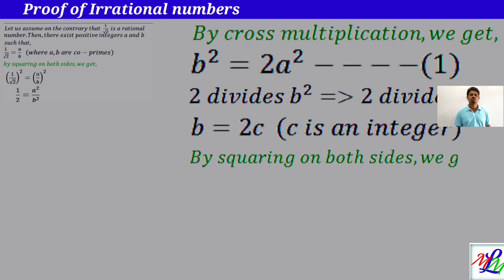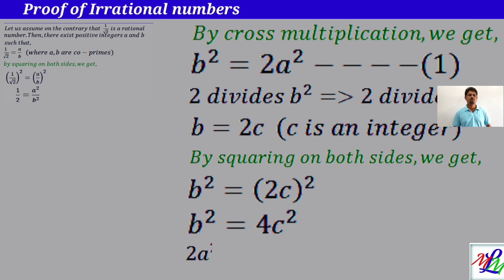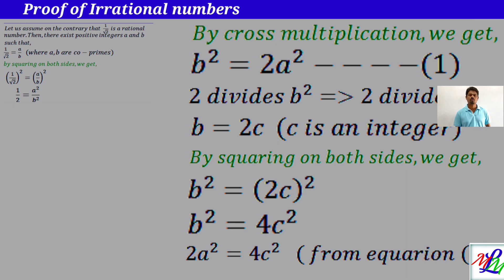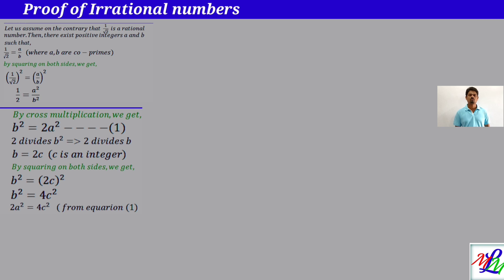By squaring both sides of b = 2c, we get b square is equal to 2c whole square, which gives b square equal to 4c square. From equation 1, b square is equal to 2a square, so substituting, 2a square is equal to 4c square, which simplifies to a square is equal to 2c square.